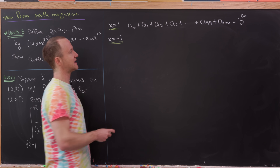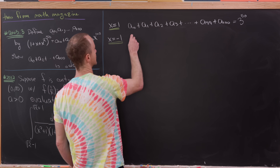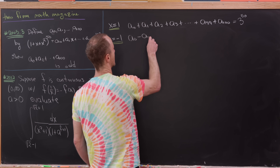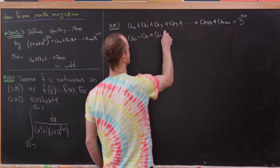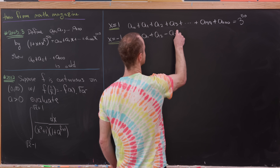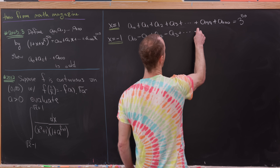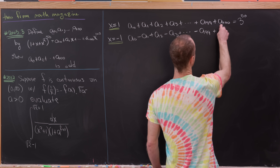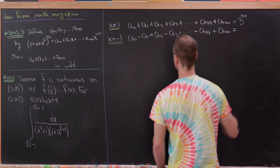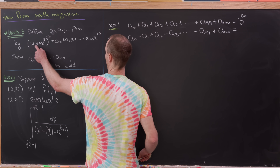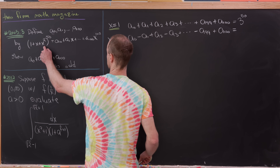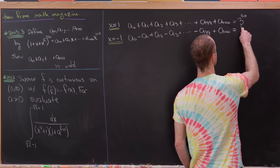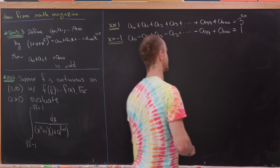Setting x = -1, we get: a0 − a1 + a2 − a3 + ... − a99 + a100 = (1 − 1 + (−1)²)^50. Everything inside becomes 1^50, which equals 1.